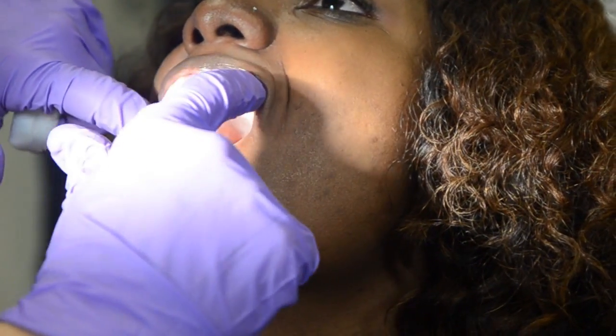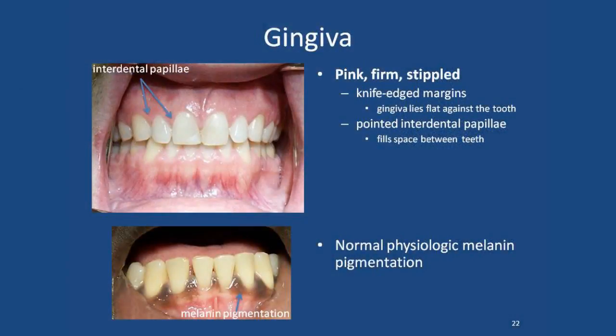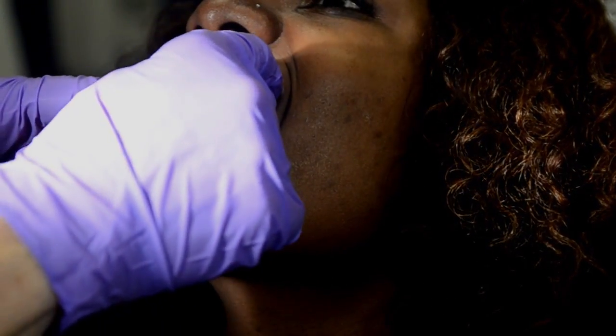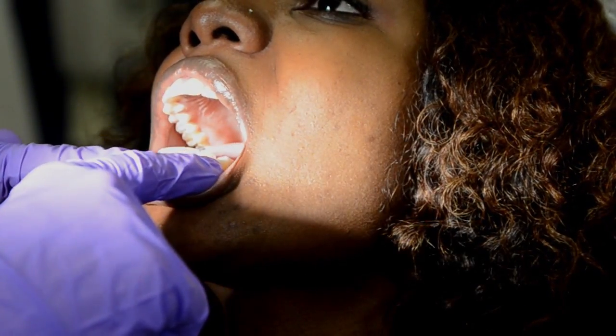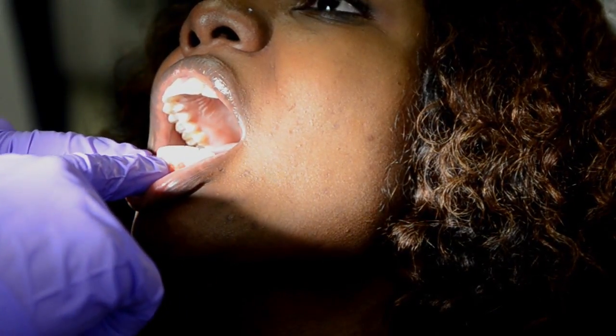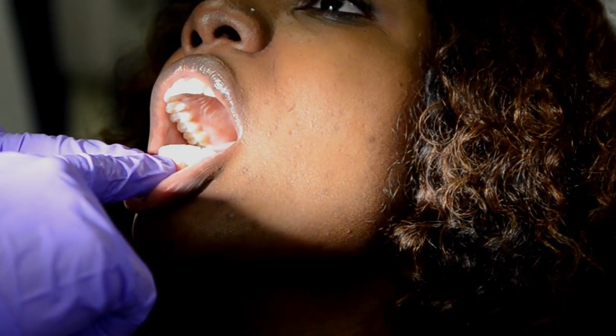Looking at her teeth and gingiva, we check for obvious swelling and inflammation. Healthy gingiva will be a nice pink color, lying flat and smooth against the tooth, with the interdental papillae filling the spaces between the teeth. If we see redness and swelling along the edges, the patient may have gingivitis. If there is significant inflammation with papillae not filling the spaces and the teeth are a bit loose, the patient may have periodontitis, where the supporting structures of the teeth are also involved.